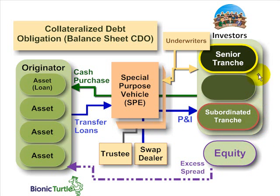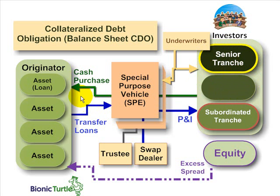Another key feature of these tranche securities and an important input into the valuation of the CDO is default correlation. Are these assets correlated in terms of their likely default? Generally, these senior tranche investors would prefer a low default correlation among these assets. Conversely, a low default correlation among the assets is actually going to hurt these subordinated tranches.